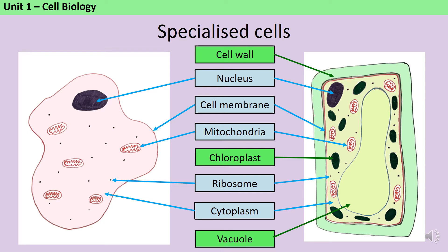In addition, we expect plant cells to have a cellulose cell wall for additional strength and support, chloroplasts which contain a pigment called chlorophyll which absorbs light energy, which the plant then uses to make glucose in photosynthesis, and a permanent vacuole which stores cell sap.